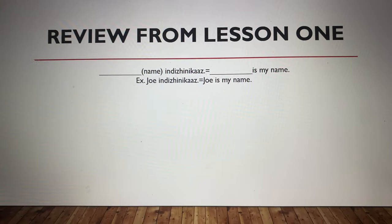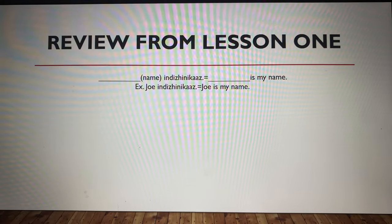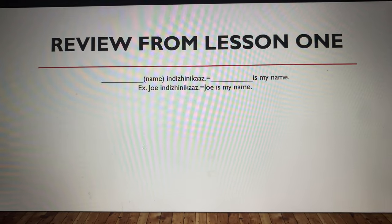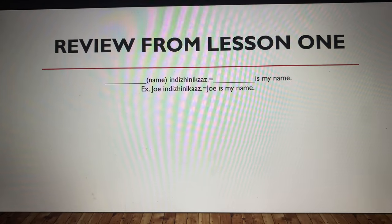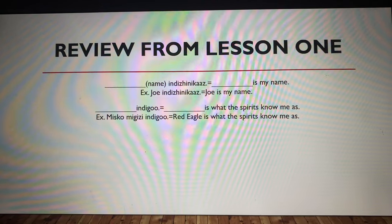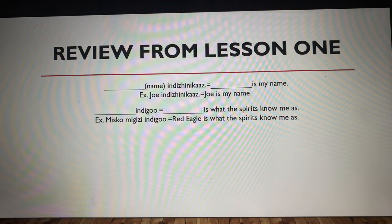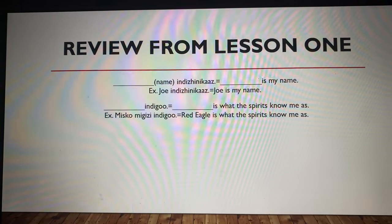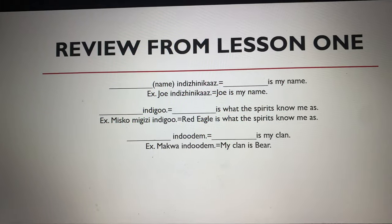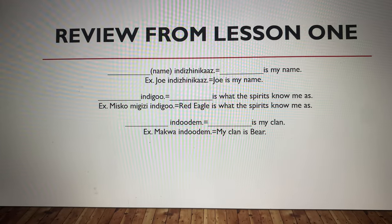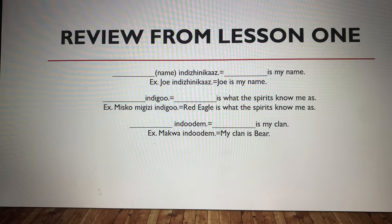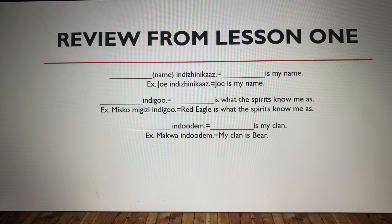Review from lesson one: Blank Indigenicaz — blank is my name. Example: Joe Indigenicaz means Joe is my name, or my name is Joe. Blank Indigo — blank is what the spirits know me as. Example: Misko Migizi Indigo — Red Eagle is what the spirits know me as. And our third part: Blank Indodame — blank is my clan. Example: Makwa Indodame — my clan is bear, or bear is my clan. And that's what we're working on in lesson two.